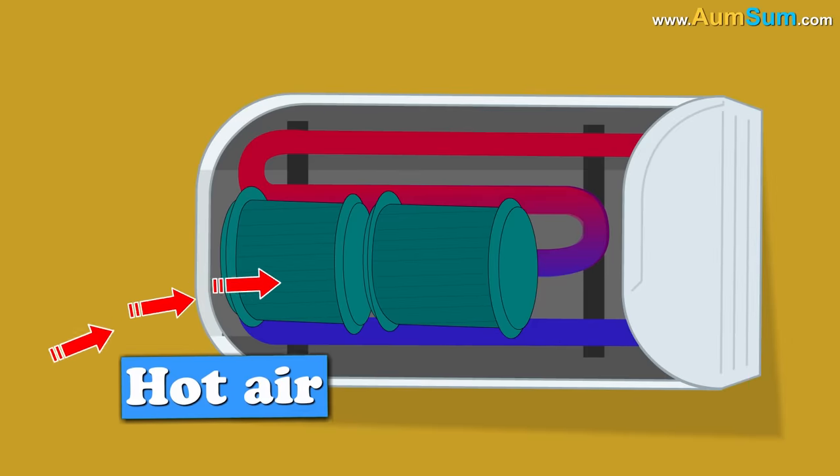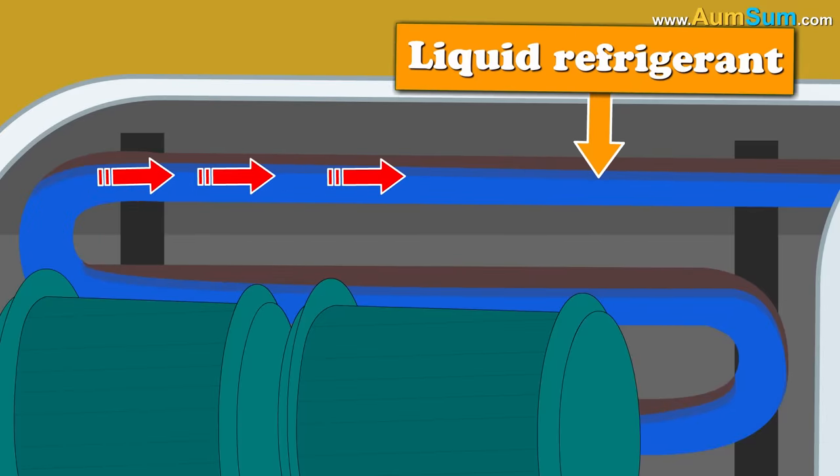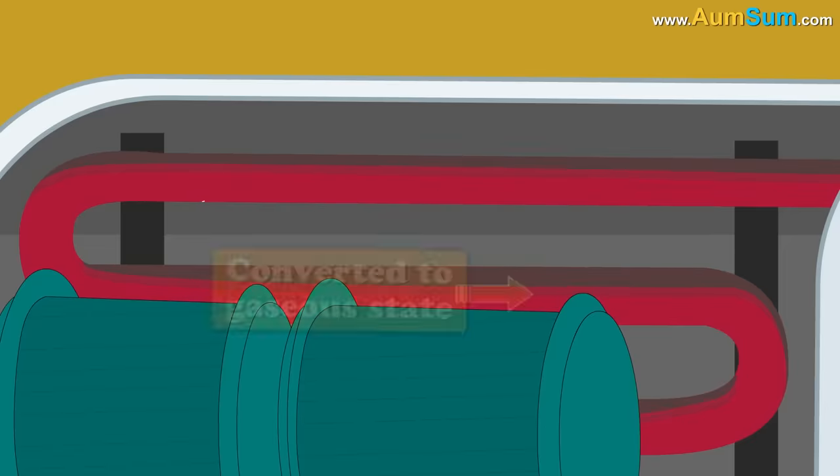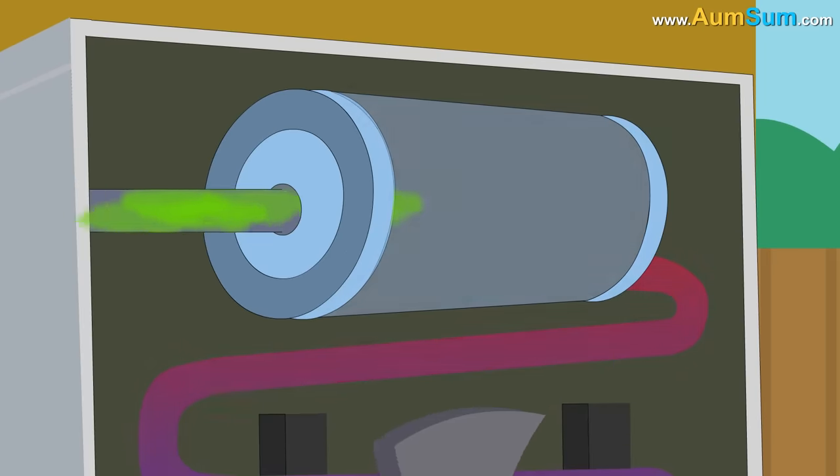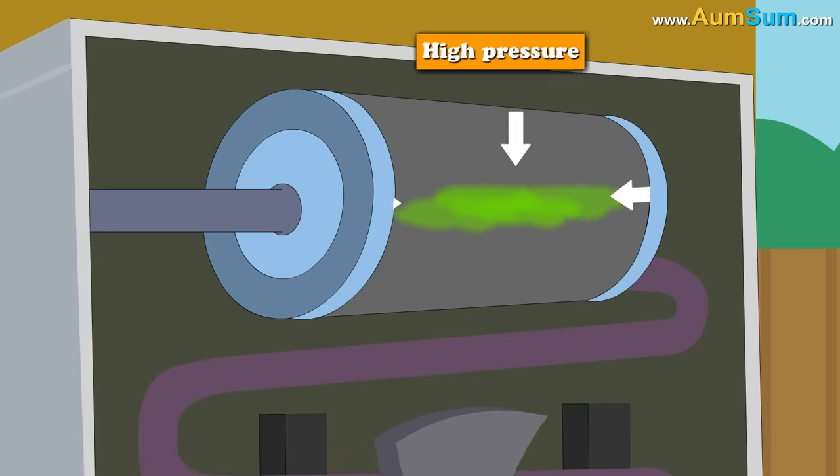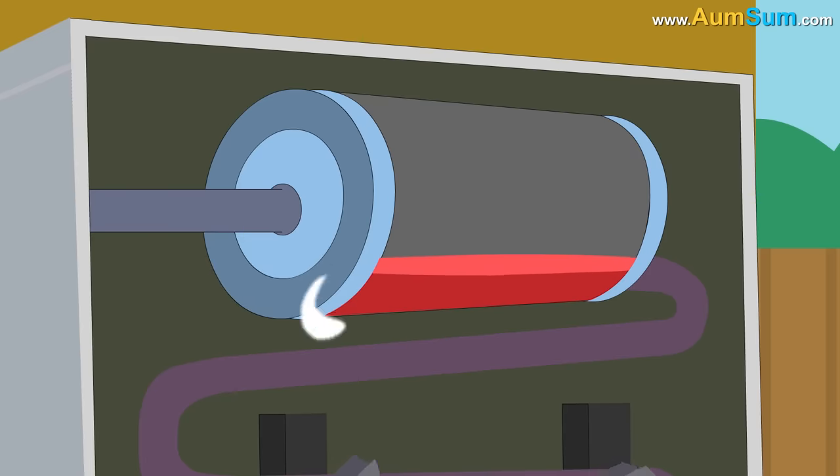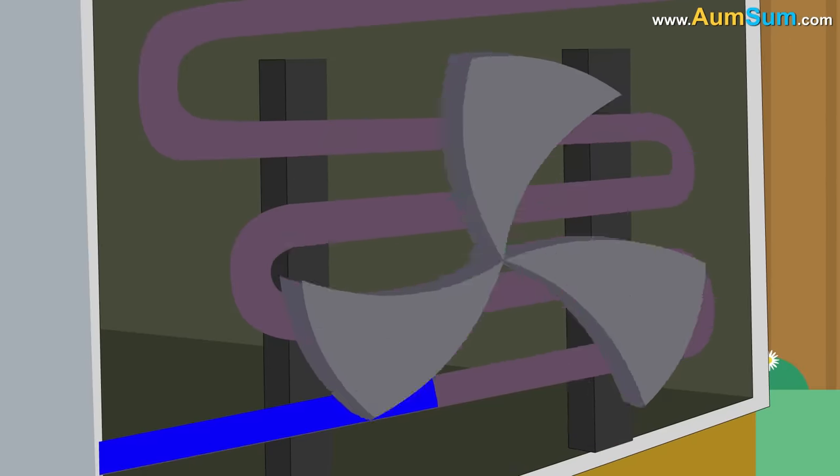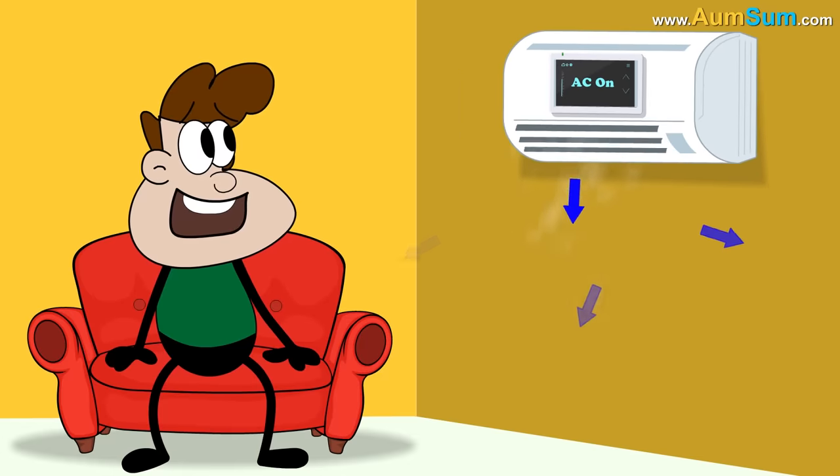When hot air from the room flows over the cold, low pressure evaporator coils, the liquid refrigerant which is present inside the coils absorbs this heat and starts getting converted to gaseous state. Now, this gaseous refrigerant passes through the compressor which puts it under high pressure and converts it back to liquid state. The extra heat which is generated during this process is let out using the condenser coils and an outdoor fan. This cycle keeps on repeating itself. This is how an air conditioner works and our rooms remain cool.